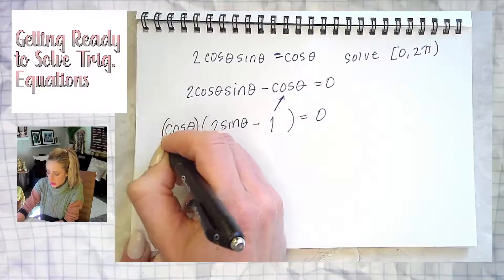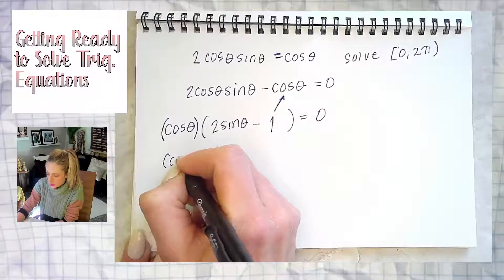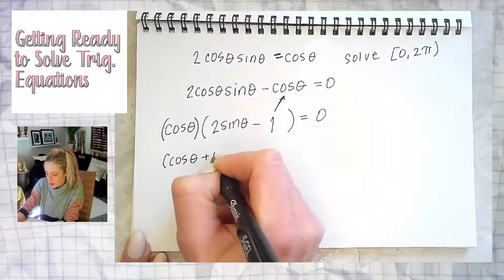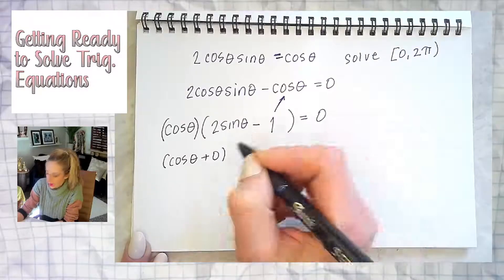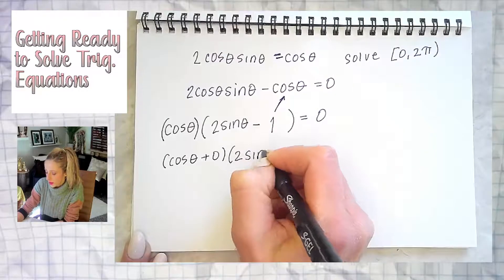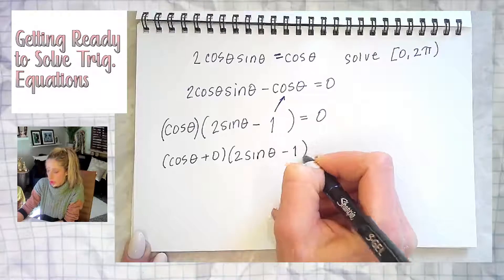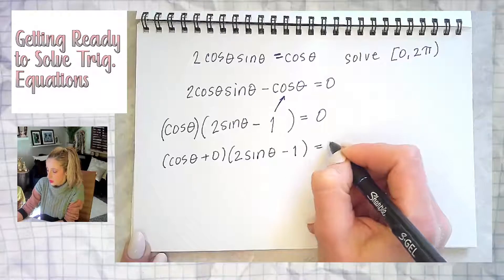Then this is already factored. Cosine theta is really the same as cosine theta plus zero, which no one writes. And then this is two sine theta minus one. So maybe it looks more like a classic factored example to you when it looks like this.